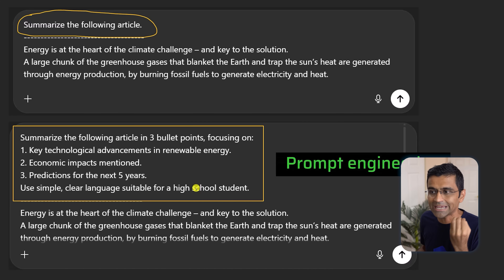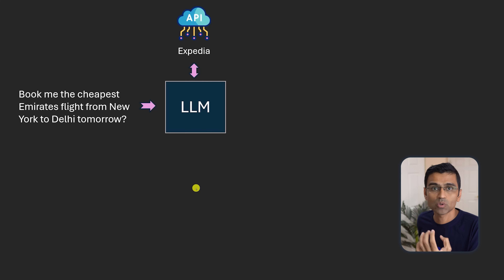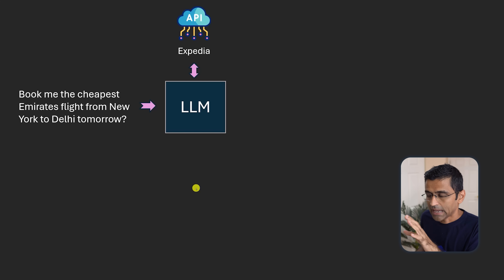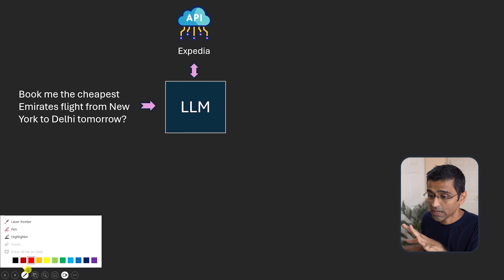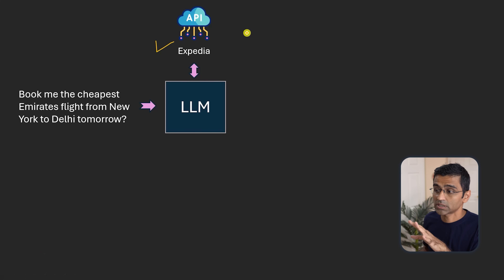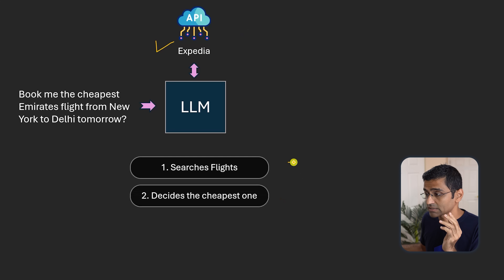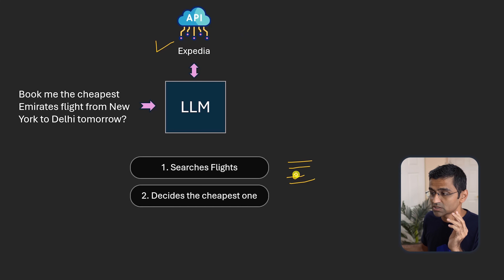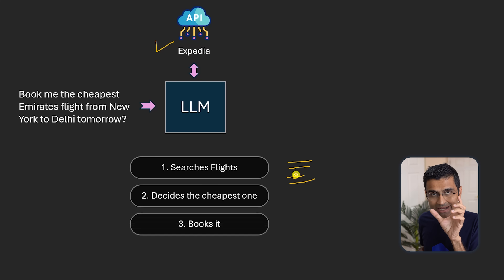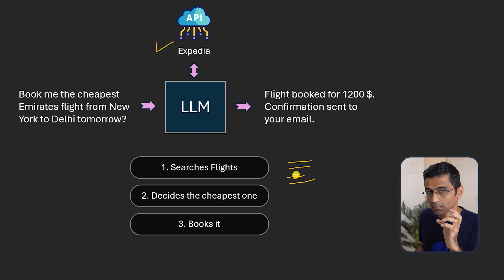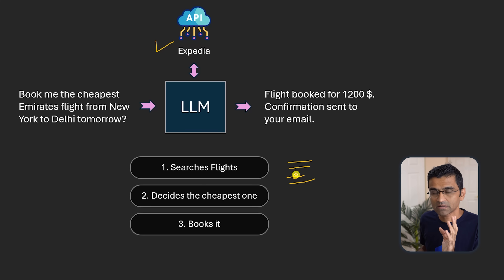When you talk about agents, you give an action to an agent such as 'book a flight between two places,' and an agent will have access to tools such as the Expedia API. Using these tools, it will first search for flights — let's say five different flights — then it will decide which is the cheapest one and book the flight. So an agent is nothing but a program which is using an LLM along with tools, knowledge, memory, etc. to perform autonomous actions.